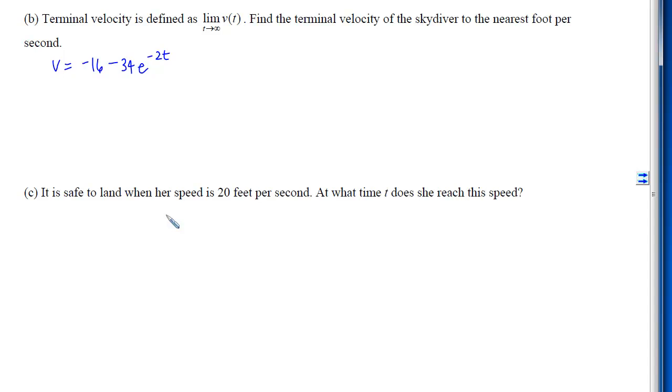If we look now at part b, our goal is to find the terminal velocity, which is the limit of this as time goes to infinity. If t gets very large, that means the exponent of e is approaching negative infinity, or this entire term will become 1 over e to a positive very large number, which is going to go to 0. So my limit will just be that -16.